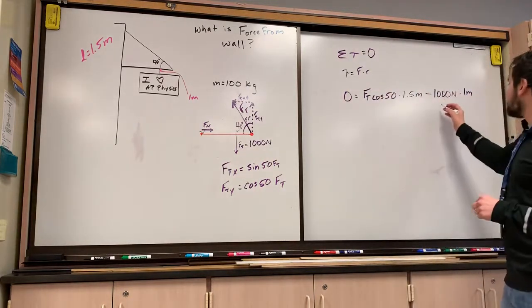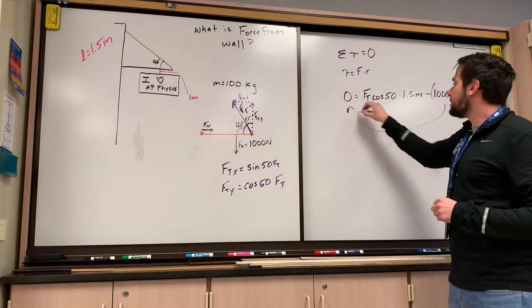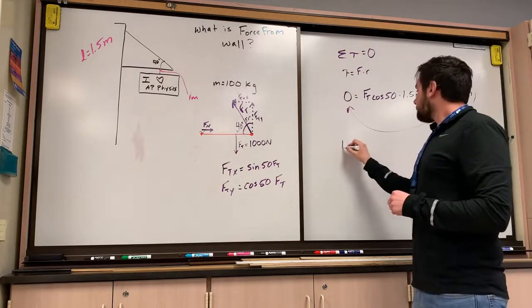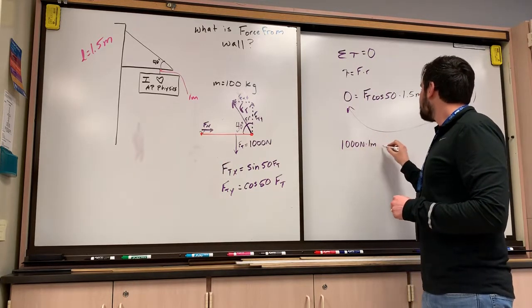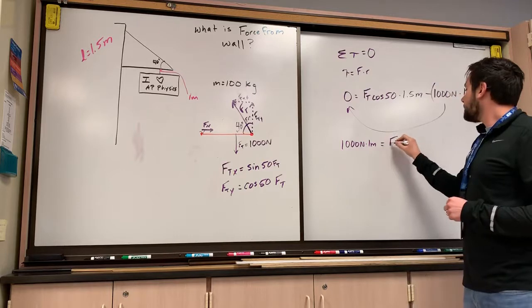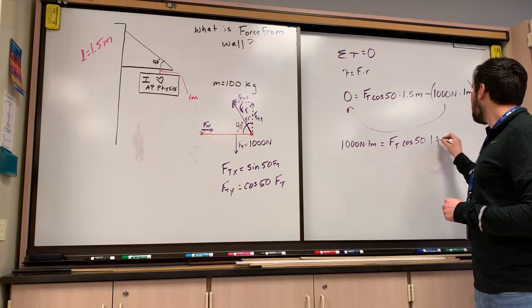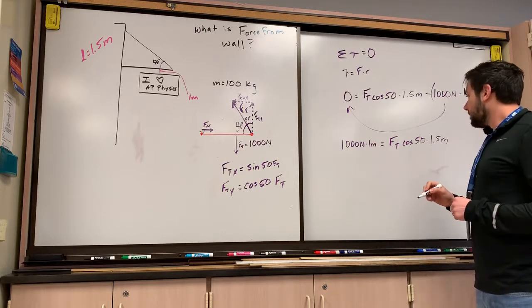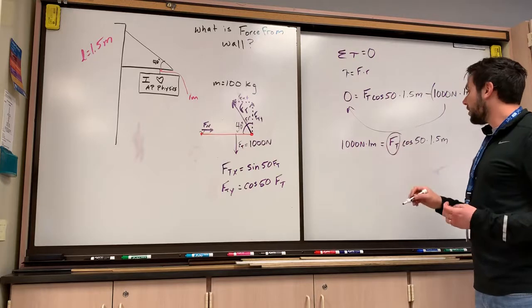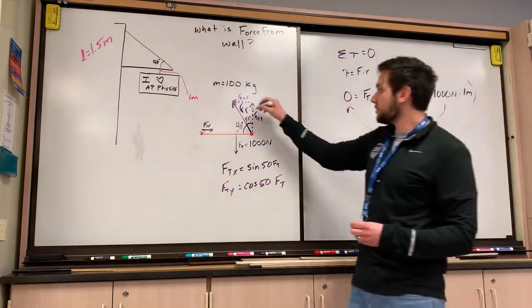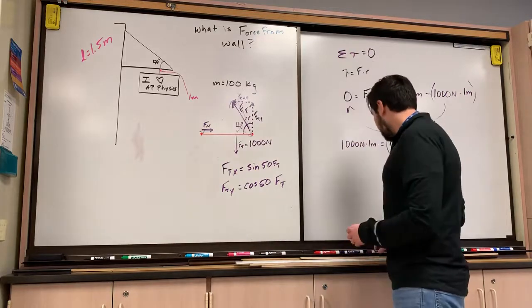So I'm going to rearrange this. I'm going to move this whole thing. I'm going to add it to this side. It's going to become 1,000 newtons times one meter equals FT cosine 50, times 1.5 meters. So that's actually pretty nice for us, because now all I have is one variable, and I can figure out what the force of tension in this rope is. So let's go ahead and do that now.